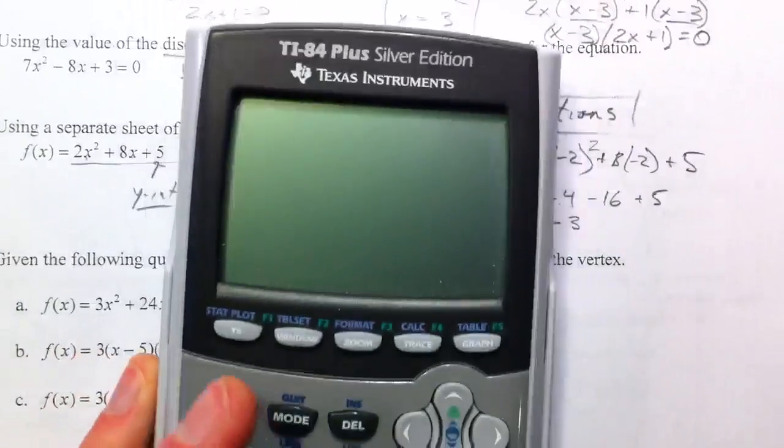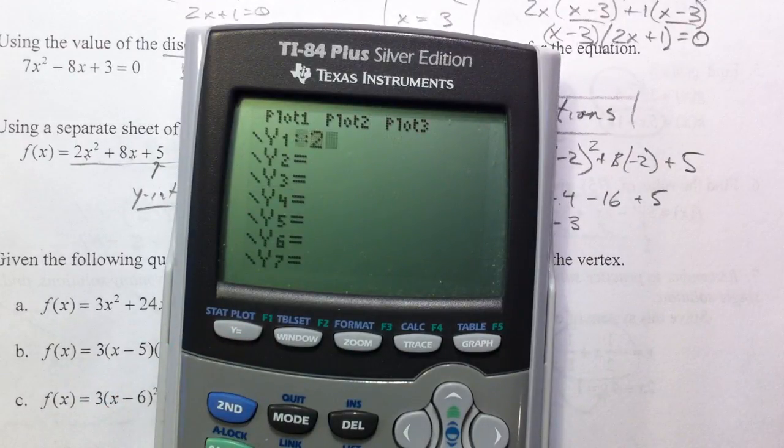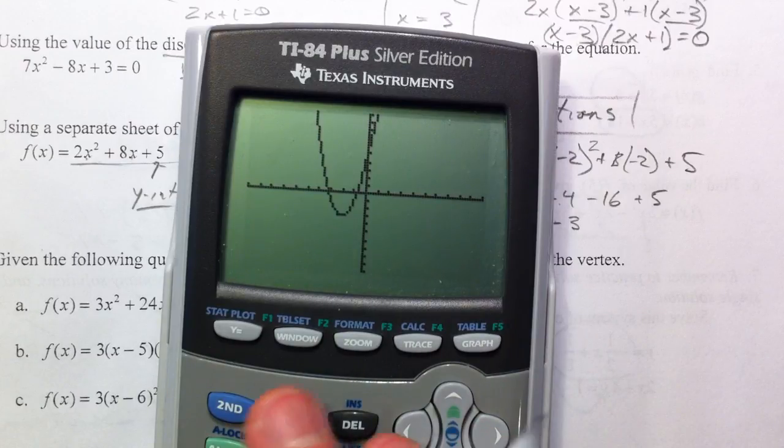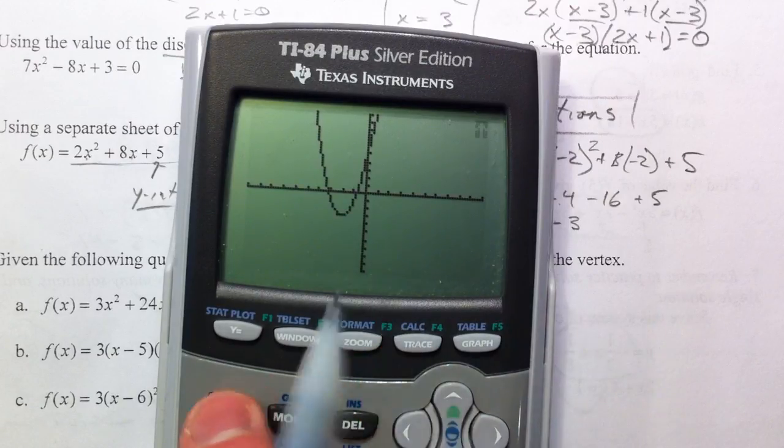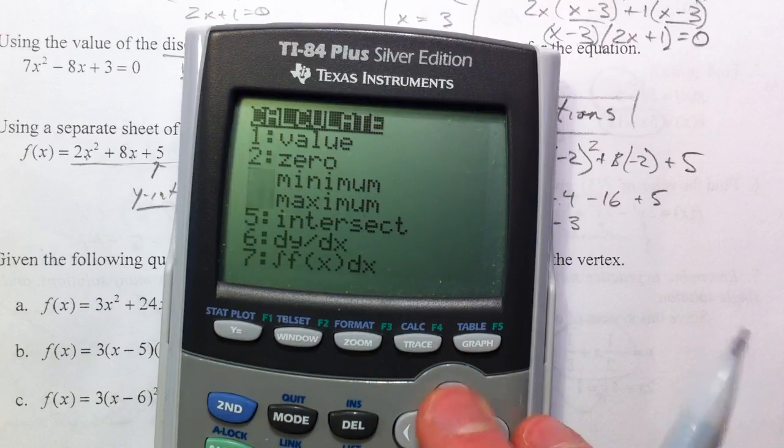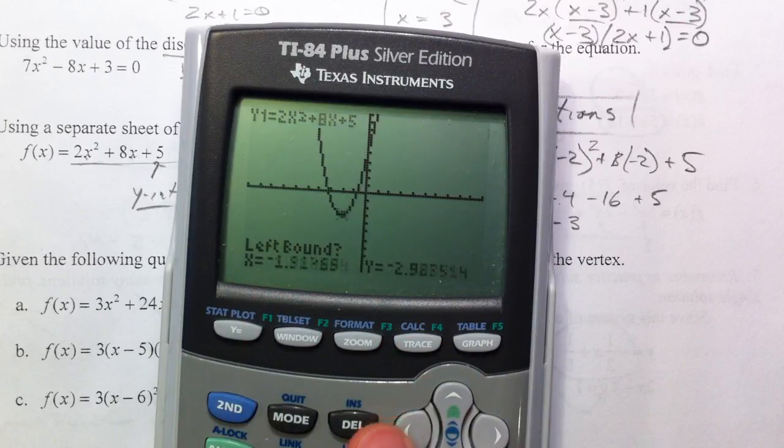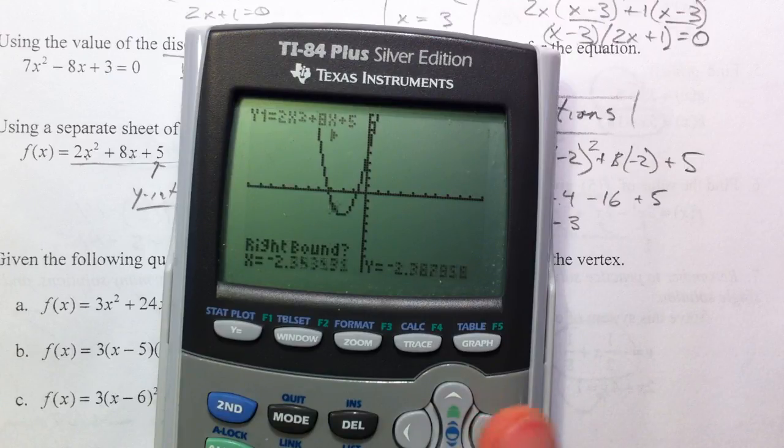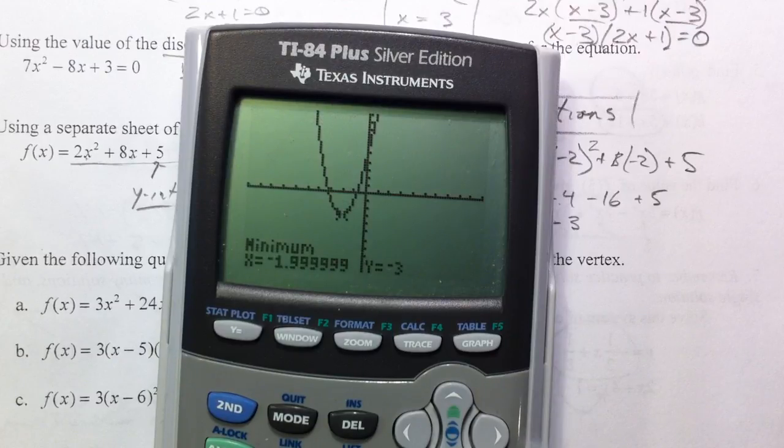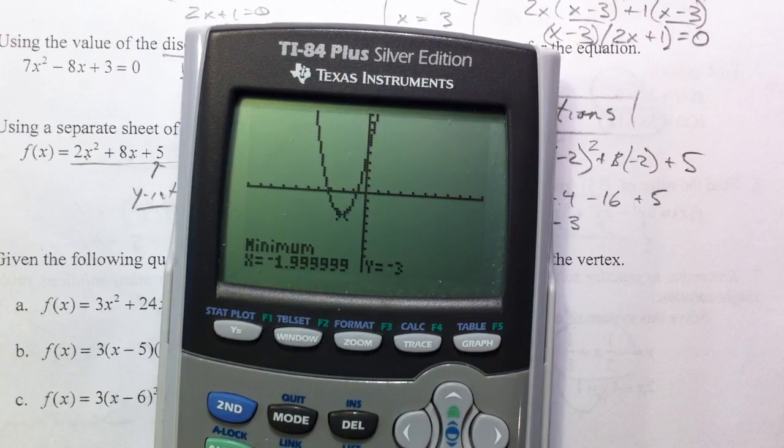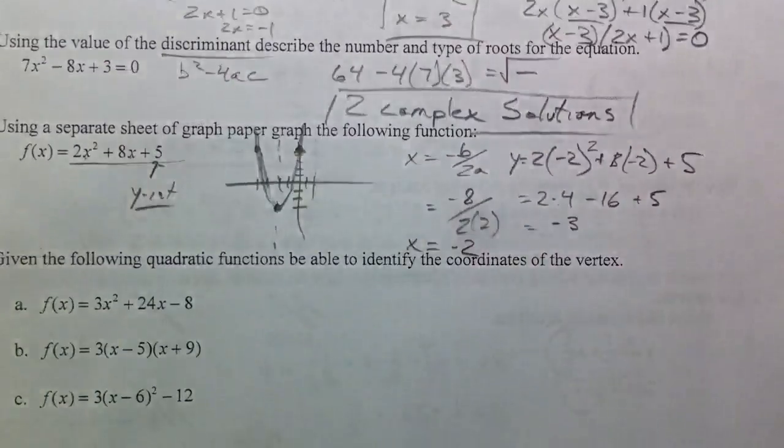Remember that you can find maxes and mins by using that calculate menu. There's our negative 2, negative 3 like we found out. But if you hit the calculate menu right above trace, hit the second button. We have a minimum, because that's the lowest it gets, and then it asks for the left bound. And so go to the left of where your minimum is, hit enter. Then it says right bound, so go to the right of where the minimum is, hit enter. And so it approximates it, it's giving me negative 1.999, it's negative 2. So that's one way you can find the vertex, if it's asking you something like the next question is.